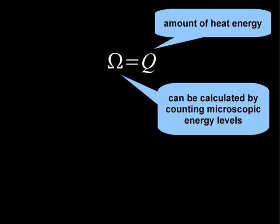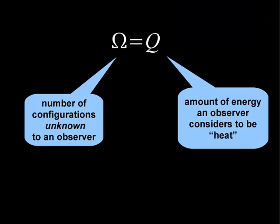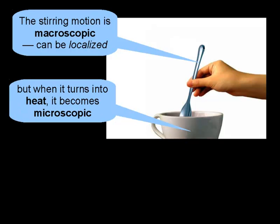In other words, we can calculate the total heat energy by counting microscopic energy levels. The left-hand side is the number of states unknown to an observer; the right-hand side is what we consider to be heat. This confirms our suspicion that heat is a subjective concept. When macroscopic motion turns into heat, we lose track of some information. The second law maintains that ambient heat cannot be transformed back to useful energy. However, as we have seen, the second law cannot be proven from macroscopic interpretations — all we know is that empirically we have never observed ambient heat being turned into useful work.